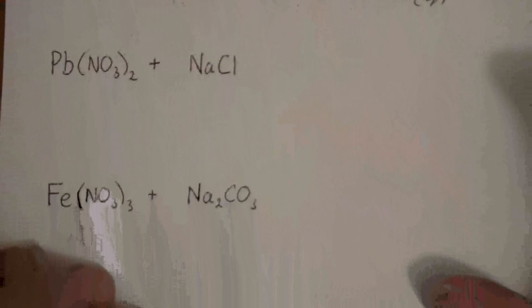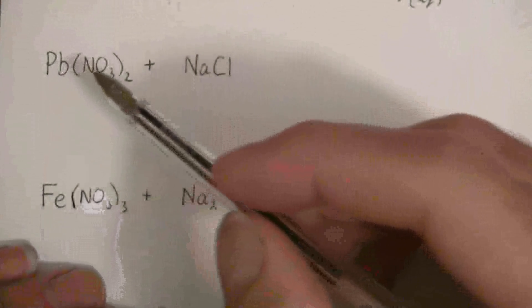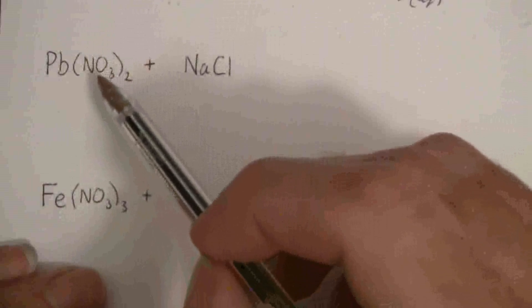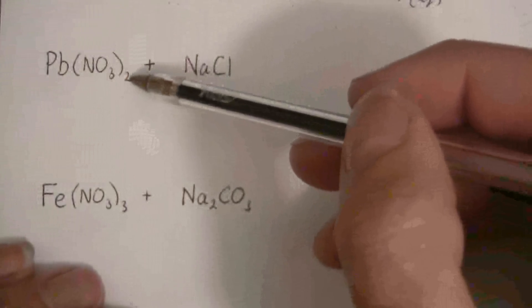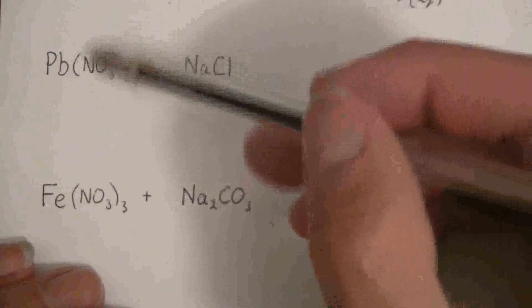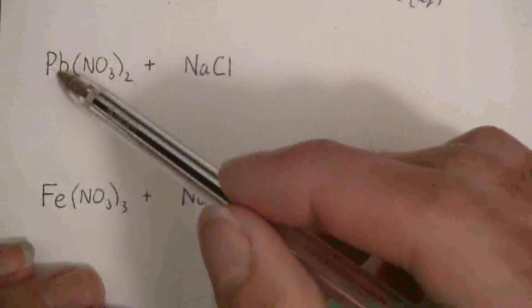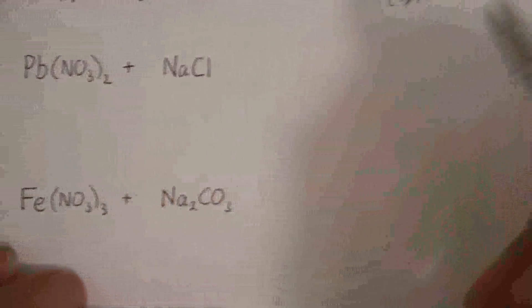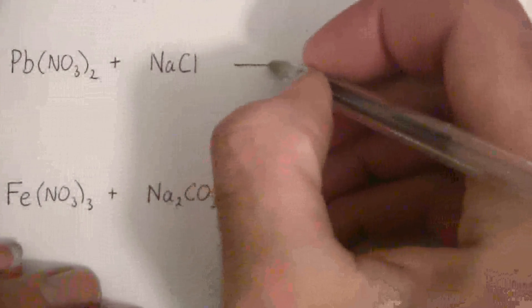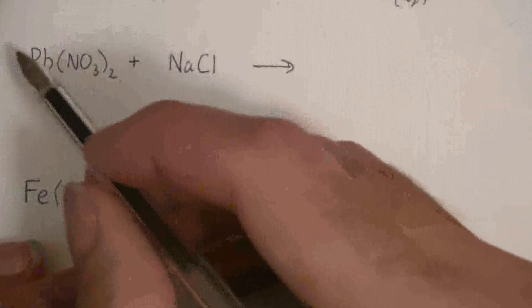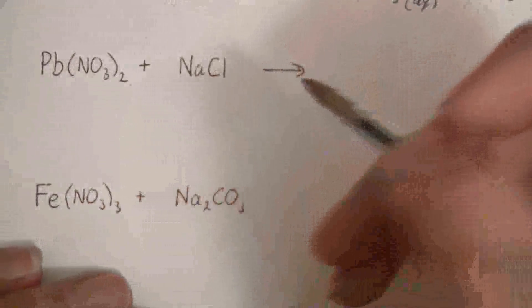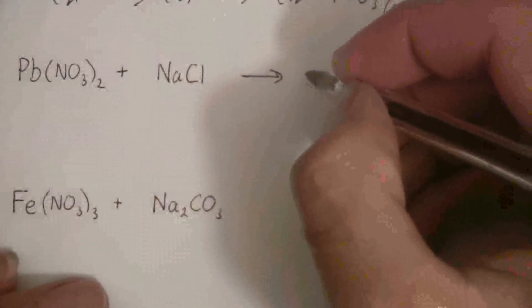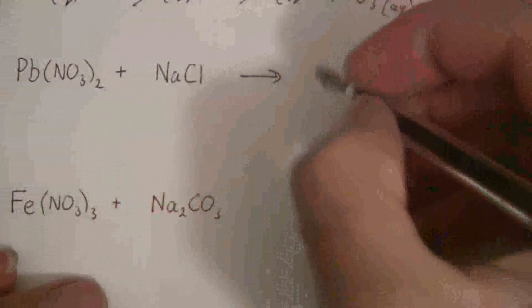The next example is lead(II) nitrate. We know it's lead(II) because NO3⁻ has a negative one charge, and I have 2 of those, giving negative two from those two nitrate ions. That must be balanced by the lead, so lead has a positive two charge. We predict products by combining the cation from the first compound with the anion from the second. Even though lead can be 2 or 4, we know its charge here and will leave it the same.